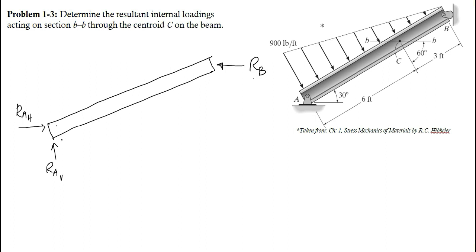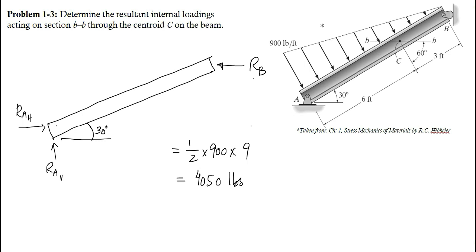This beam is at an angle of 30 degrees. A uniformly variable load is applied to the beam, so we can convert this UVL to a concentrated load: 1/2 multiplied by 900 multiplied by the length of the beam, which is 9. When you do the calculation you will get 4050 pounds. The concentrated load acts at a distance of L/3 from the larger side, so from point A it acts at a distance of 3 feet, with an intensity of 4050 pounds.